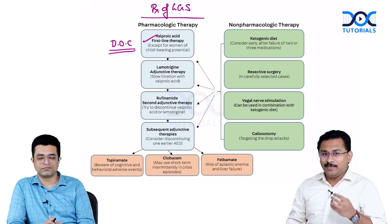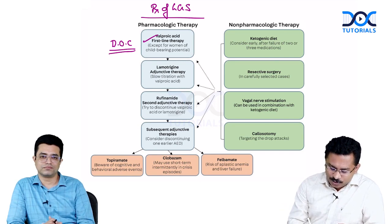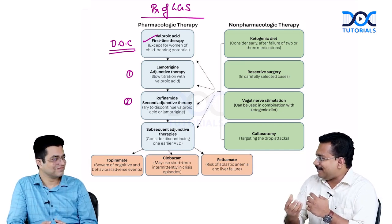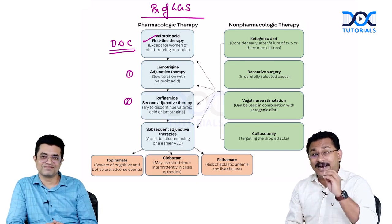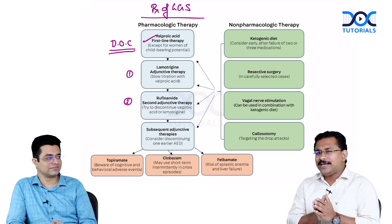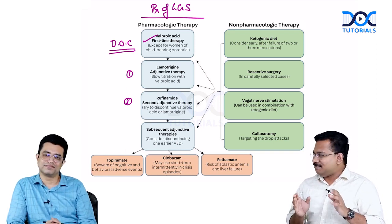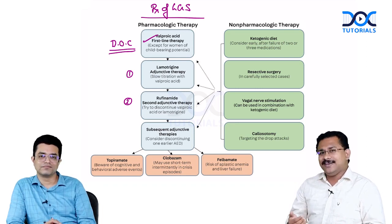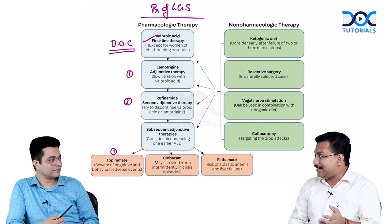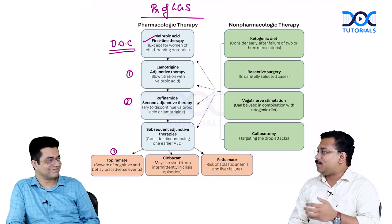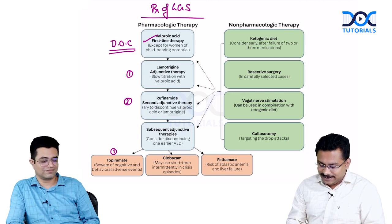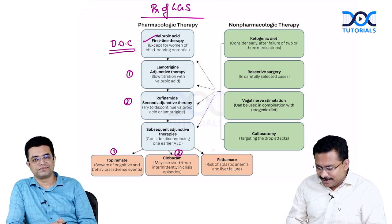For drug-resistant seizures, other adjunctive agents are important. Number one is topiramate — used in the management of LGS and also in prophylaxis of migraine. Second is clobazam. Third is felbamate. Students sometimes confuse whether rufinamide is the drug of choice — remember, valproic acid is first line; rufinamide and lamotrigine are adjunctive.